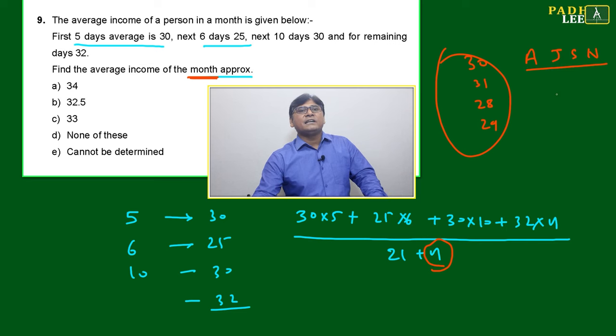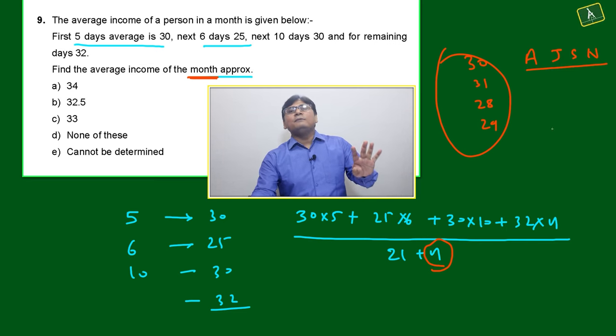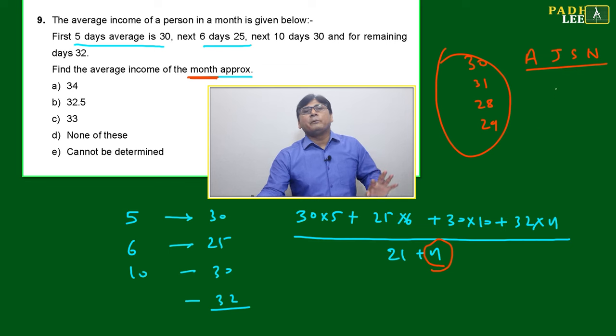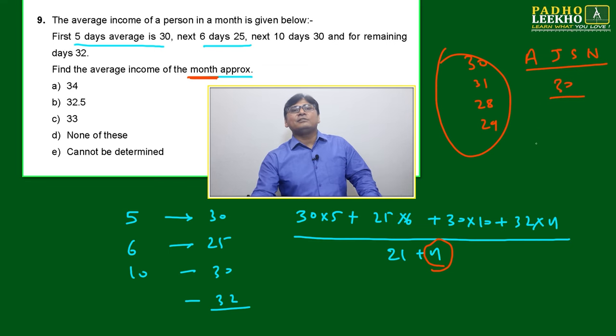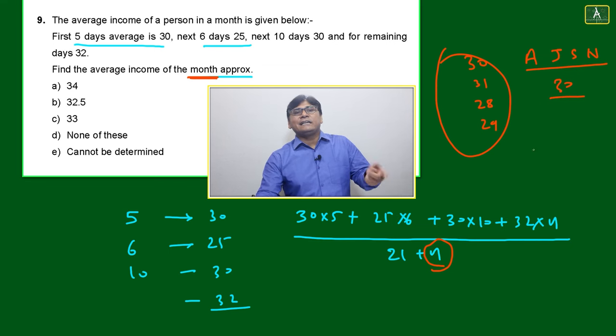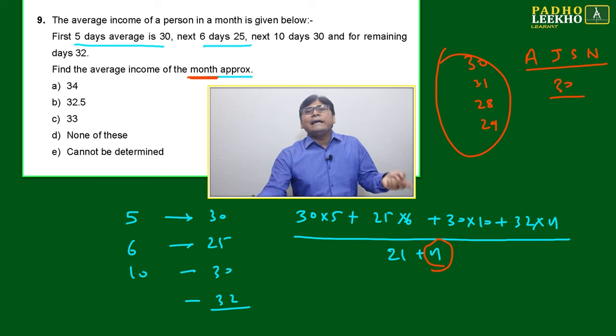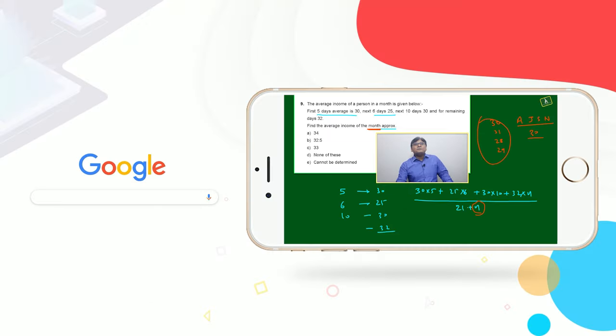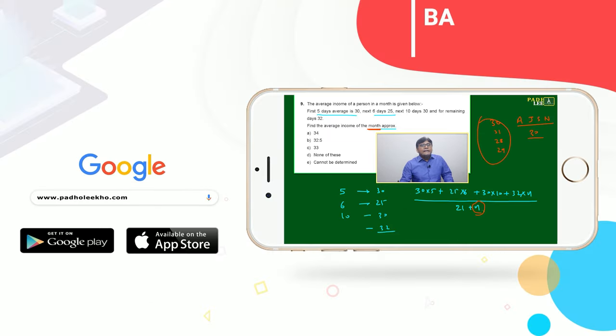April, June, September, November—AJSN will be 30 days. This will be helpful during calendar problems. The remaining will be 31 days except February, which may be 28 or 29. But we don't know which month is there, so we're not sure of the total number of days. Then we won't be able to find n, so how will we be able to carry forward?